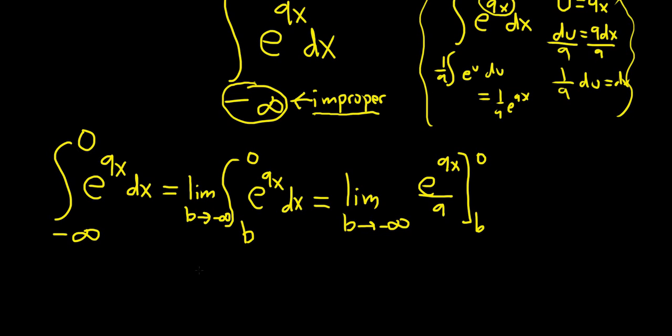Okay, so this is equal to the limit as b approaches negative infinity. And first we plug in the 0. So we get e^0 over 9 minus, and then you plug in the b. So we get e^(9b) over 9. Just like that.